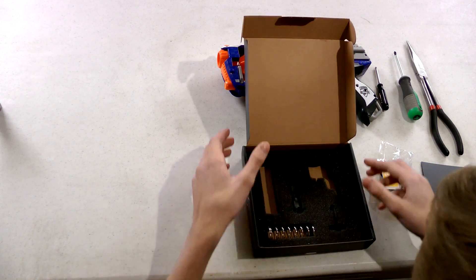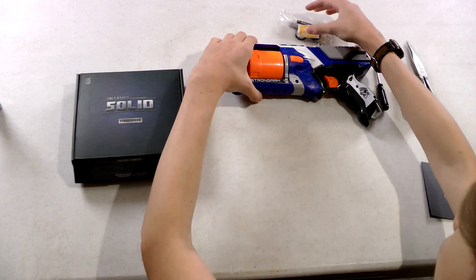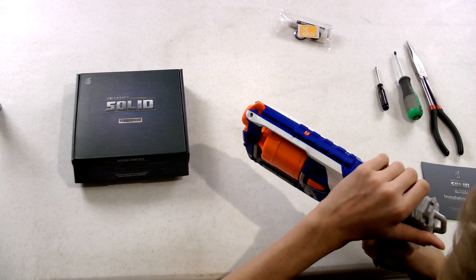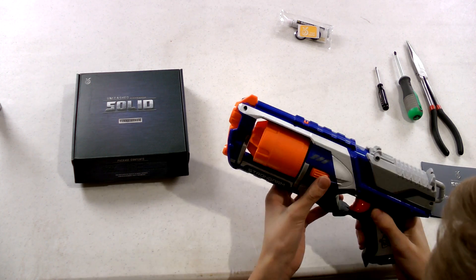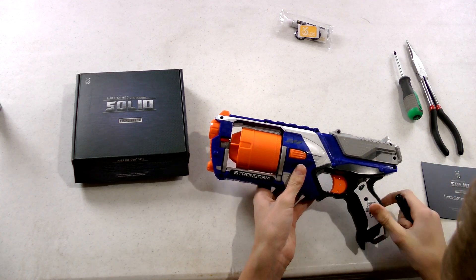So let's get into this mod. First, you want to make sure you do not have any darts in your gun. You also want to make sure that your gun is not cocked. Mine is not. So basically all you do now is just take out all these screws.